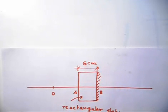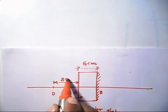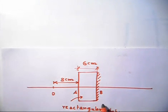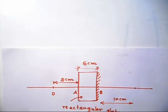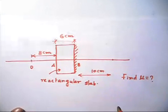Also given: one face is silvered. The object is held at 8 centimeters in front of one face, so this object distance is also given — this distance is 8 centimeters. The final image is formed 10 centimeters behind the silver face, so final image is formed somewhere here. We have to find the refractive index of glass — find μ.